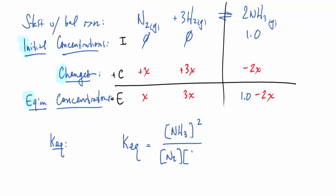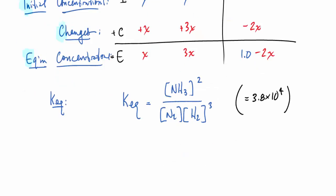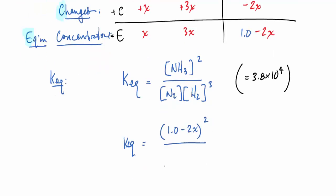So then go to the KEQ expression, write it down, that's the one we knew before, also 3.8 by 10 to the 4, and then substitute those values in there. So we'll put in for the ammonia the 1.0 minus 2x and the x and 3x for the hydrogen and nitrogen respectively.